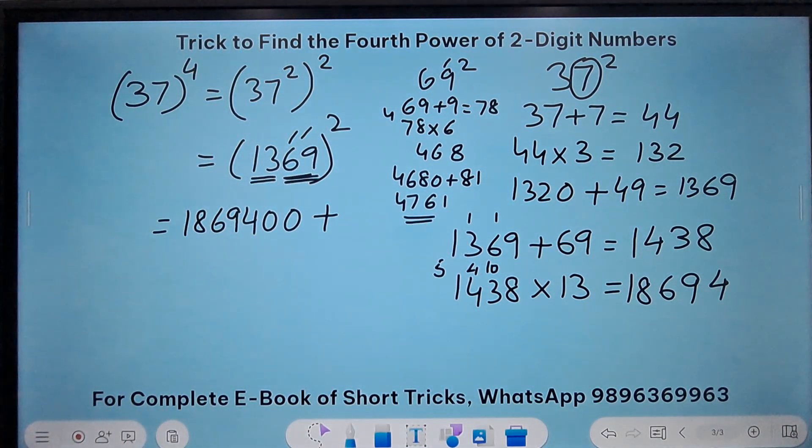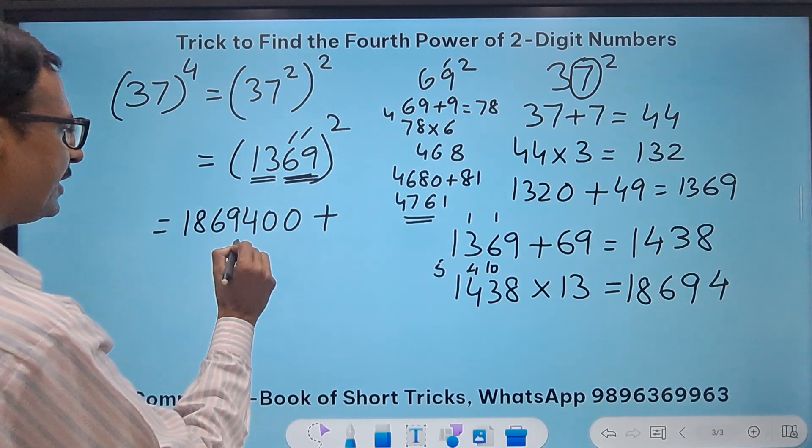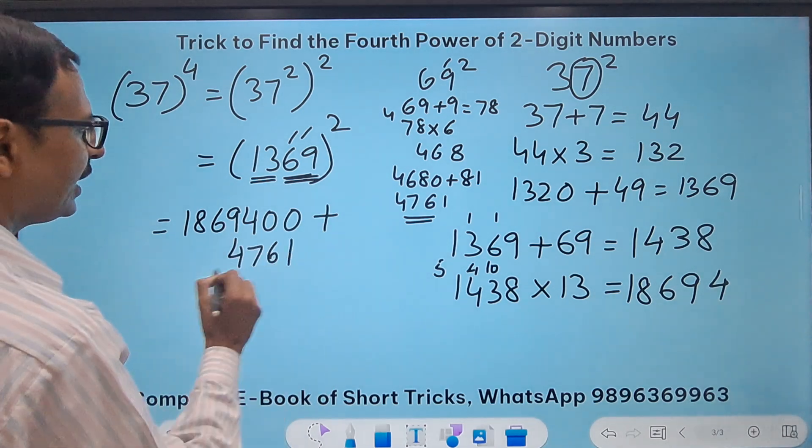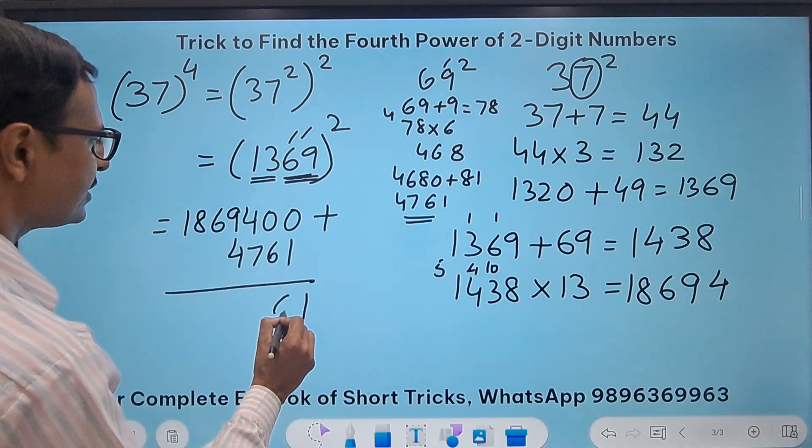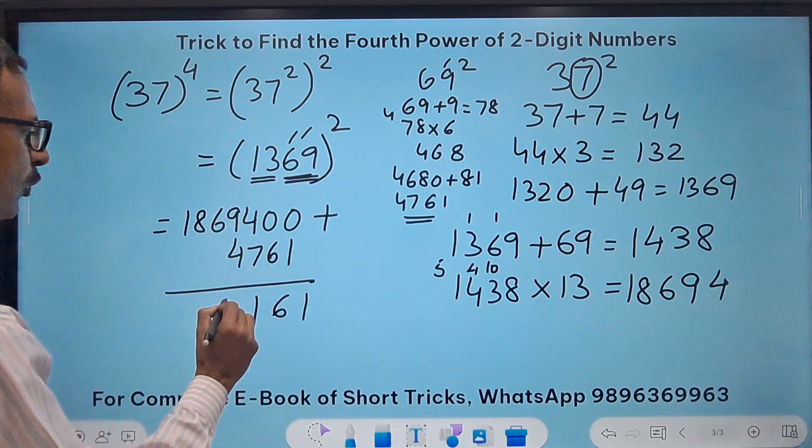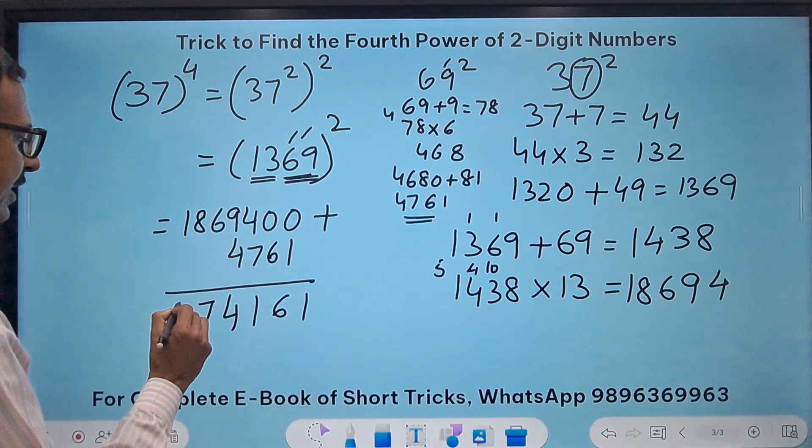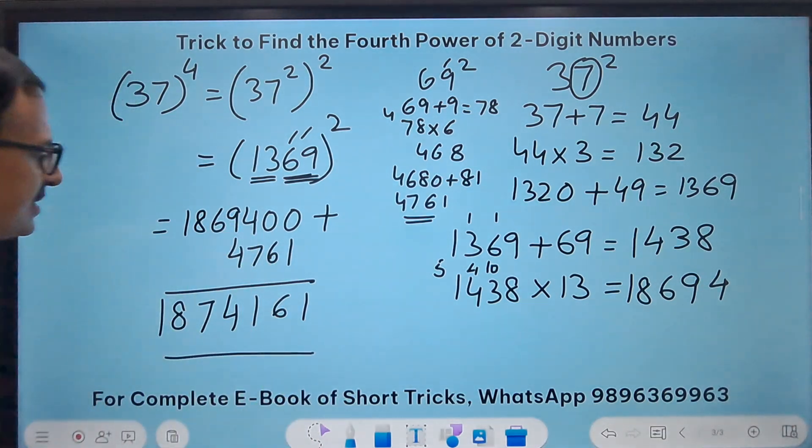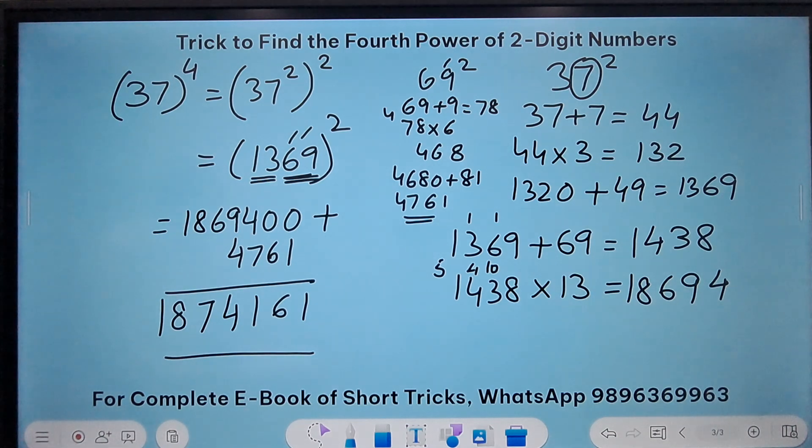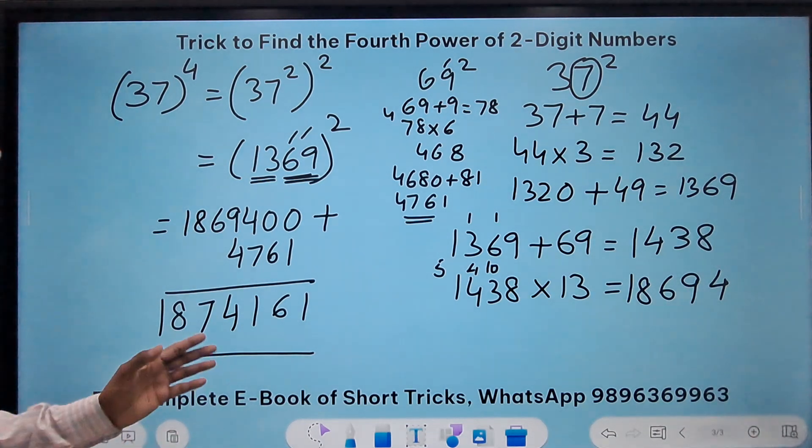That is the square which I need to add to this number. So I add 4,761 and my answer for the question will be 1,869,400 plus 4,761 equals 1,874,161, which happens to be the square of 1,369 and that is the fourth power of 37.